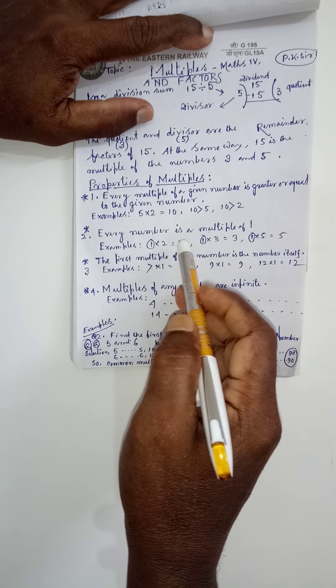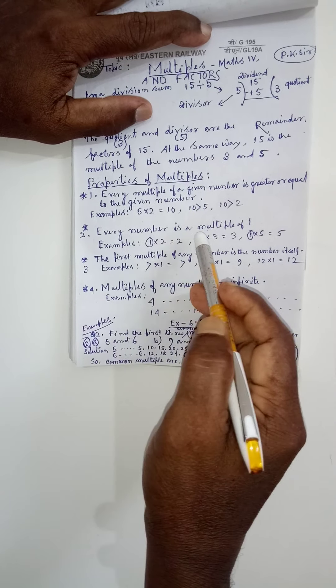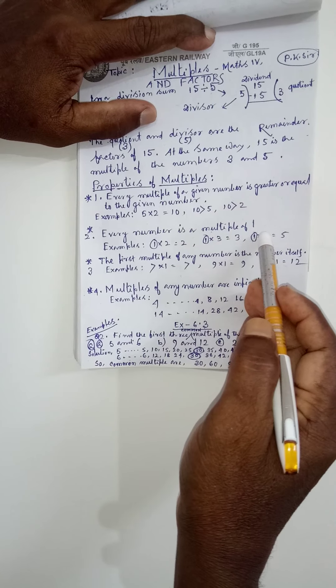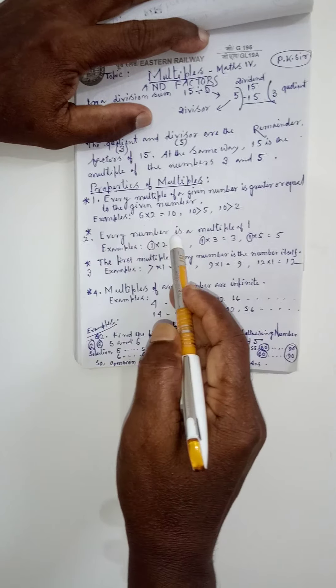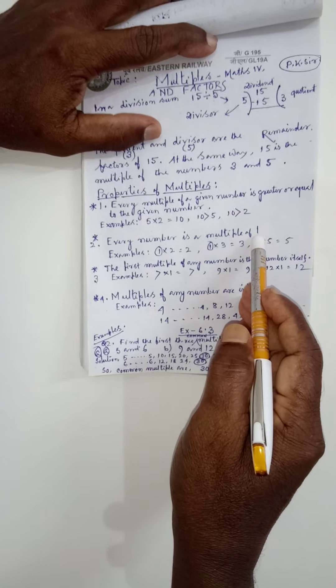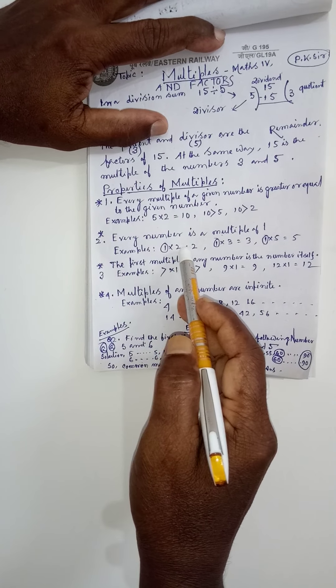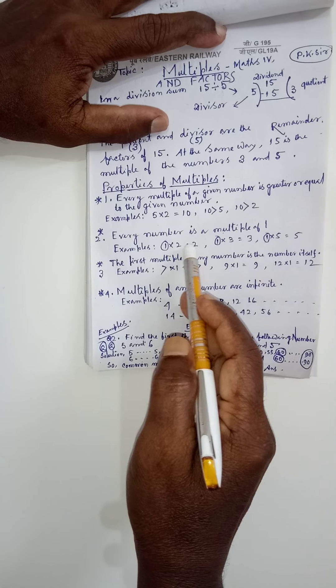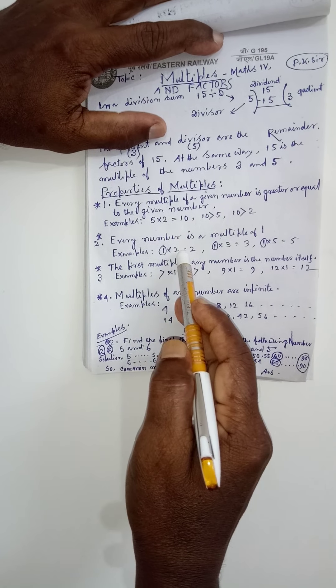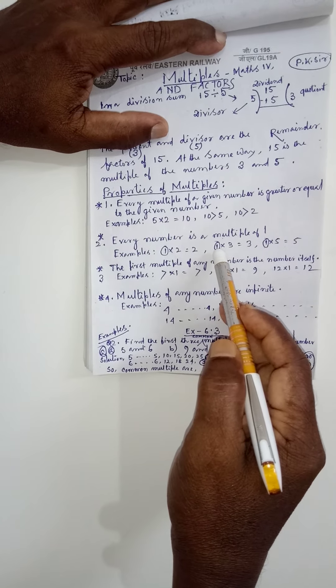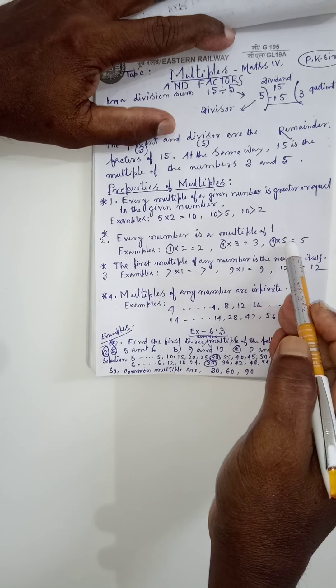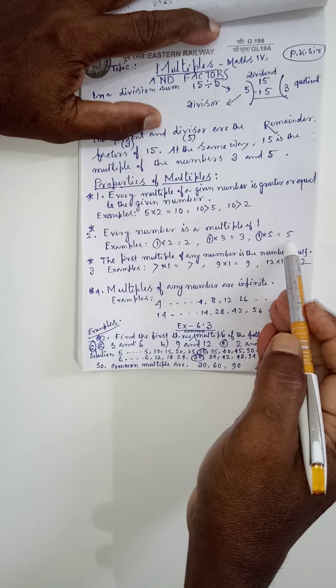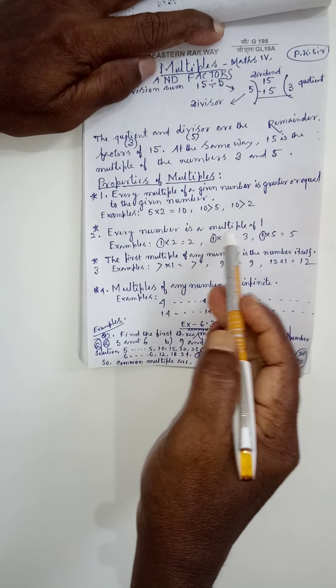In the same way, next comes every number is a multiple of 1. That we already come across. Every number is a multiple of 1. See, 2 is a number. 2 means what? 1 into 2 is equal to 2. 1 into 3 is equal to 3. 1 into 5 is equal to 5. So every number is a multiple of 1.